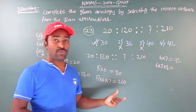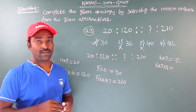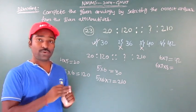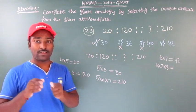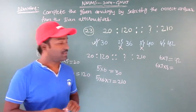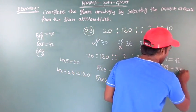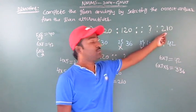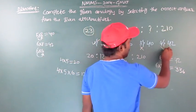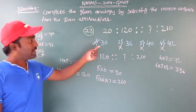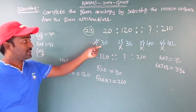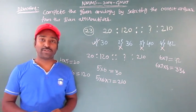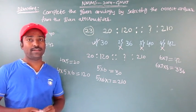Using the split and merge technique: 42 can be written as 40 plus 2, all into 8. So 40 into 8 is 320, plus 8 into 2 is 16. That gives 320 plus 16 equals 336. I am not getting 210 — I am getting 336, which is not equal to 210. So the fourth option is also wrong. The only option matching the analogy is the first option, which is 30. Such type of problems can be solved by getting the right idea at the right time.